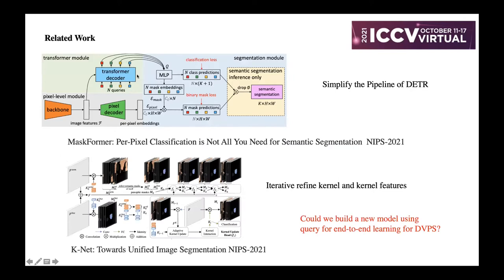There is also related work named MaskFormer and Kinet. MaskFormer is an improved version of DETR which simplifies the pipeline and directly outputs classification and mask prediction using queries. Kinet is a concurrent work that proposes to interactively refine the kernel and the kernel features. Based on this prior knowledge, could we build a new model using object queries for end-to-end learning for the DVPS task?